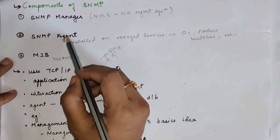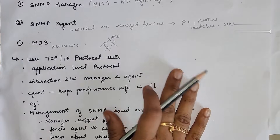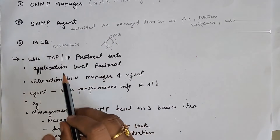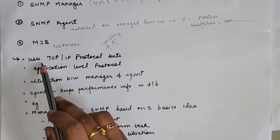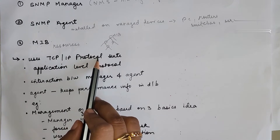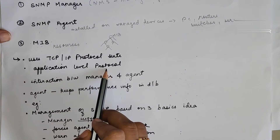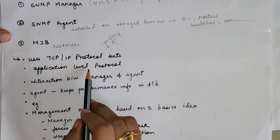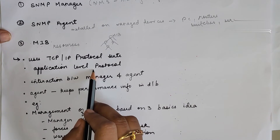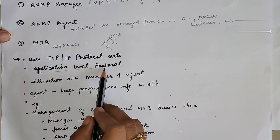These are the three main components of SNMP. Another important point is that SNMP uses the TCP/IP protocol suite and always works at the application layer. It is designed at the application level so that we can easily monitor different devices installed on different physical networks.